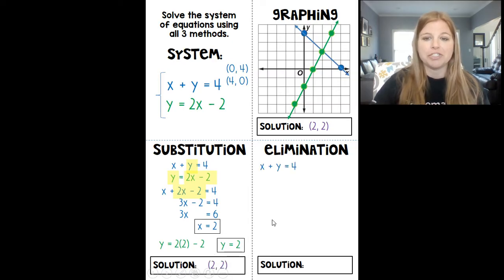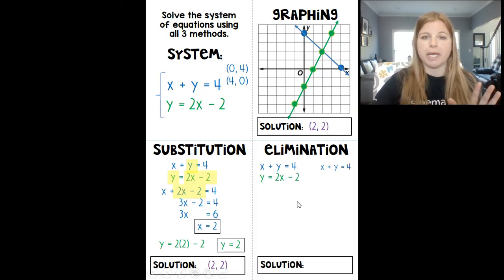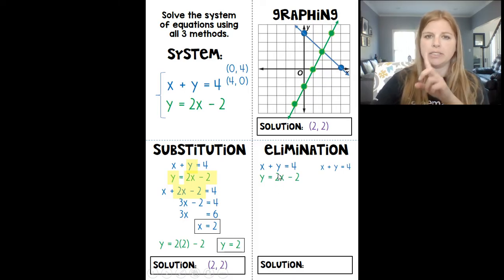Last one, elimination. So I'm going to take these two equations. Now elimination works the nicest when both equations are in standard form. And the first equation is in standard form, x plus y equals 4, so I don't need to do any rearranging for that. But our second equation we know is in slope-intercept form. And in order to get that to be in standard form, I would need to move my 2x over to the left-hand side. So I'm going to subtract 2x on both sides so that my equation now looks like this: negative 2x plus y equals negative 2.